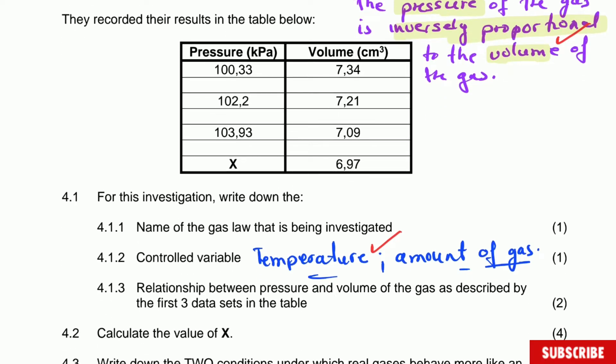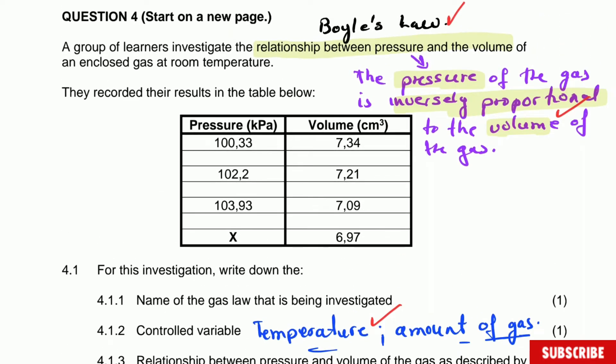Calculate the value of X. Now for Boyle's Law the formula is really simple. All you have to say is that P1V1 is equal to P2V2, extremely easy. So we use any of the readings for X. For instance, let's use the first one as P1V1. Let's say 100.33, that is the pressure, multiply by volume which is 7.34, equal to P2 is X and V is 6.97.